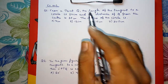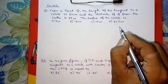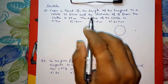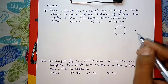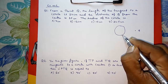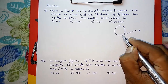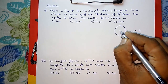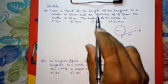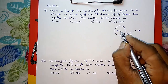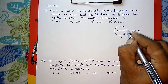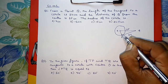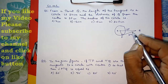First we have to draw the figure. From a point Q, we have a circle and a point Q outside it. The length of the tangent to the circle is 24. We call the tangent point P and label the center O. The distance of Q from the center is 25. We need to find the radius.